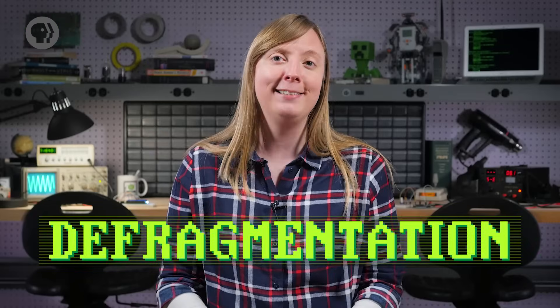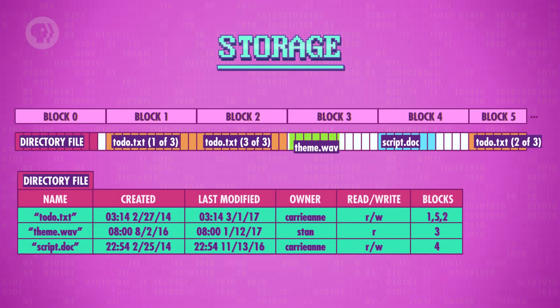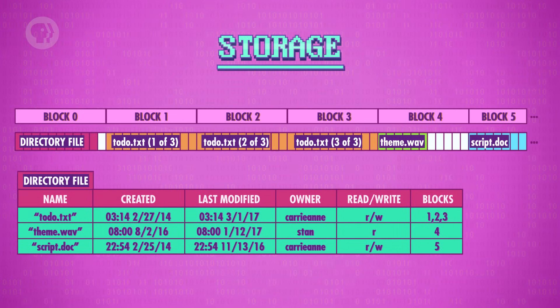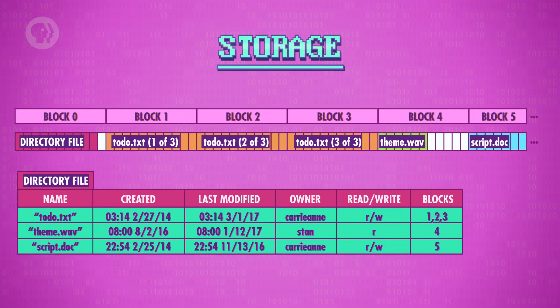The answer is defragmentation. The process is really simple – the computer copies around data so that files have blocks located together in storage and in the right order. After we've defragged, we can read our to-do file, now located in blocks 1 through 3, in a single quick read pass.